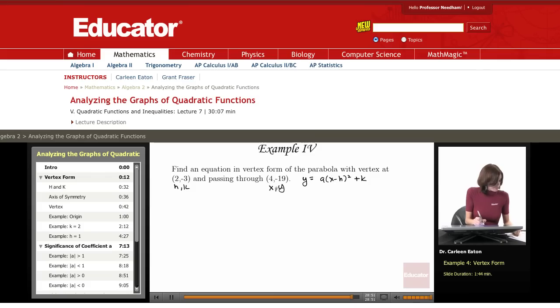Okay, since I have all of these, I can find a. I don't know what a is. That's my unknown. Well, I have y equals negative 19. I don't know a. x is 4, h is 2, and k is negative 3.